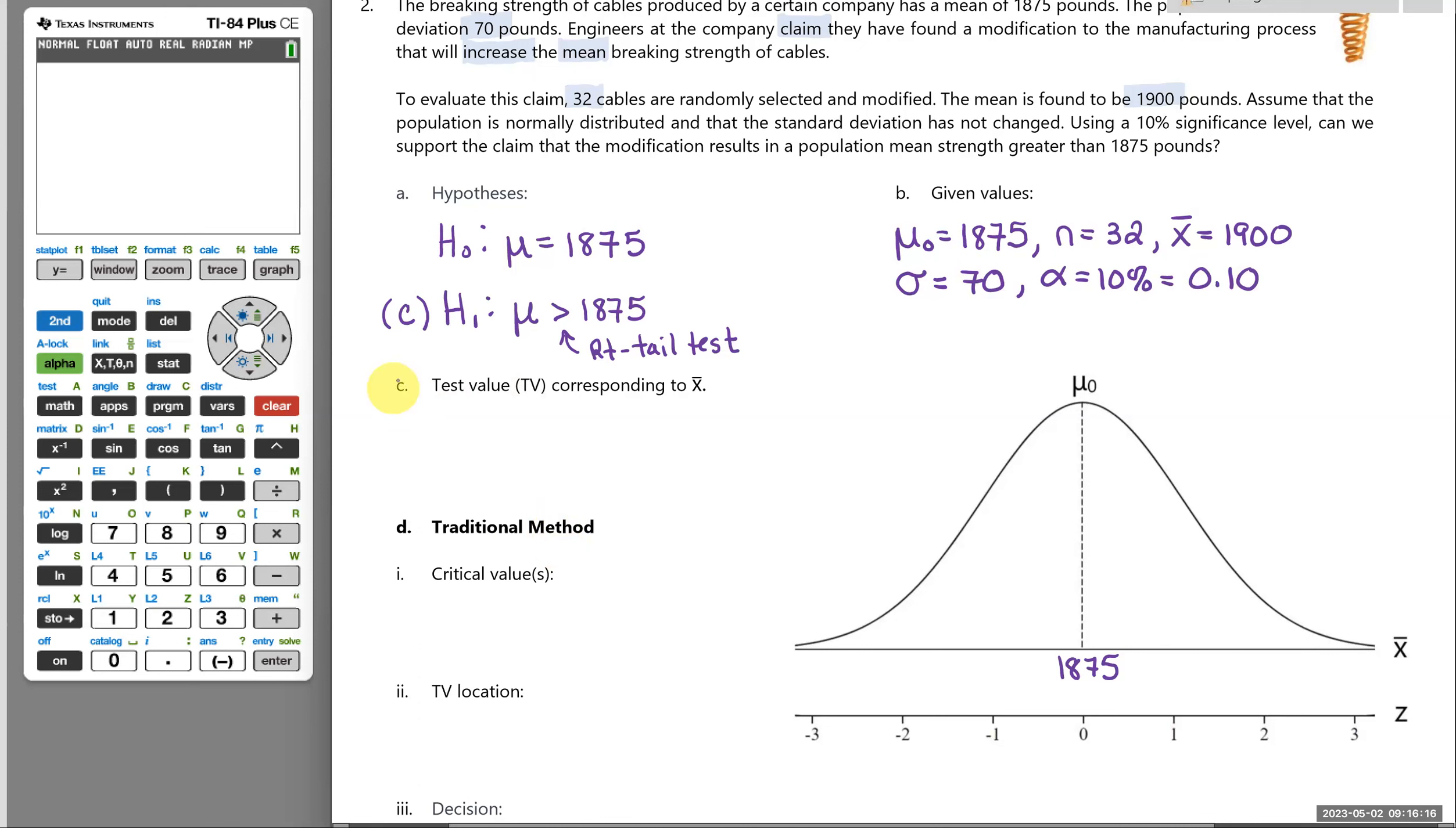And whether we do the traditional method or the p-value method, both of them require the test value. So that's why I do it next. So we could just jump right into the critical values first for our traditional method, but I just like to take care of the test value that corresponds to the x-bar value. So we're testing a claim about a population mean. Sigma is known. So if you're provided with sigma, we can use the z-test to find the test value. So you don't have to do the calculation by hand. So we could find it using the formula, but we do have a graphing calculator here to help us out.